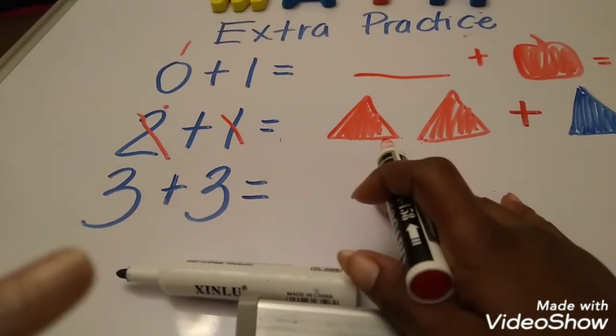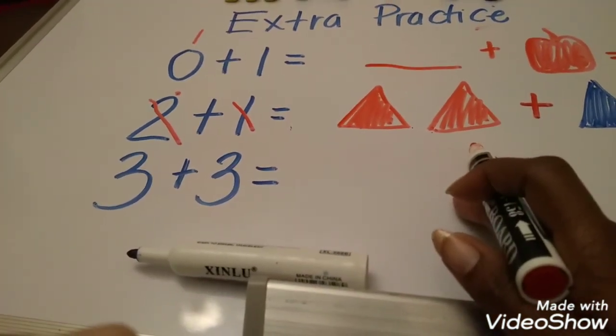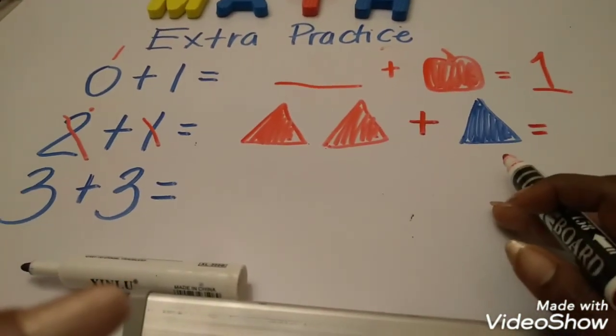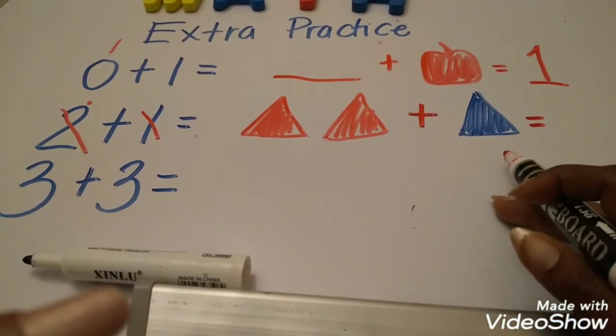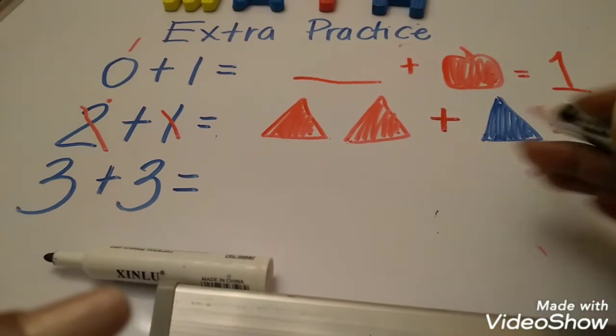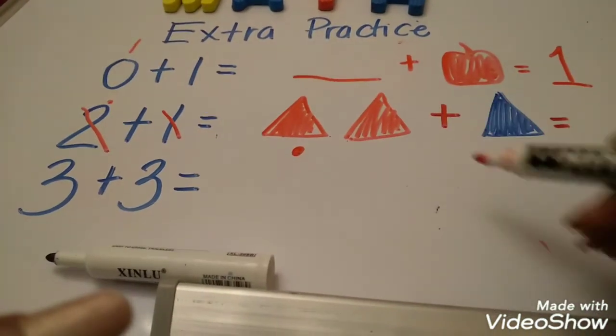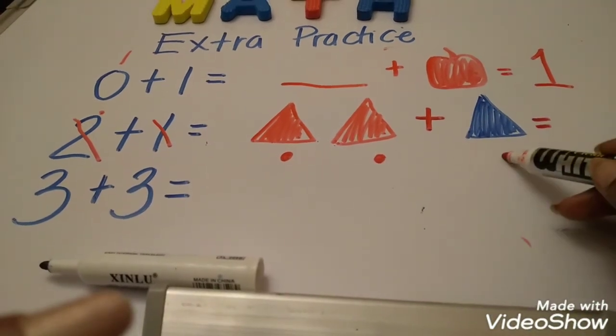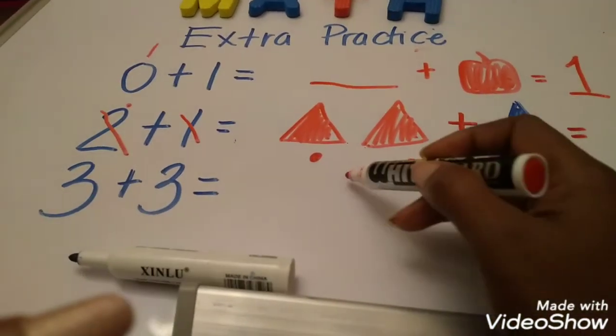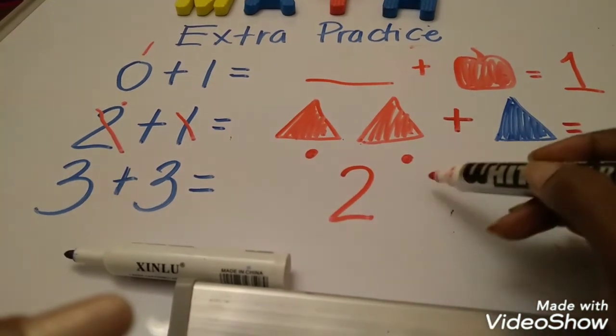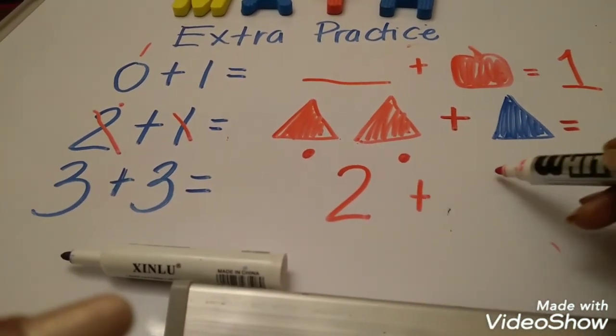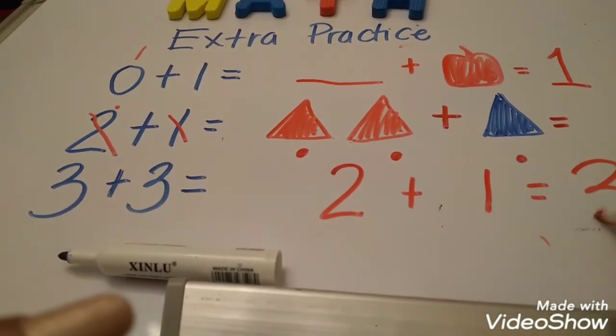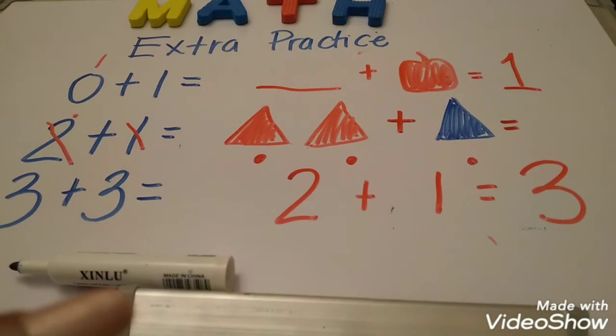And then we have to put the equal. So, Jad gave me two triangle cookies. And then Jude gave me one more triangle cookie. So how many cookies do I have in all? Let's count them. One. Two. Three. Three. So, two. Plus one. Equals. Three. That is how you do addition.